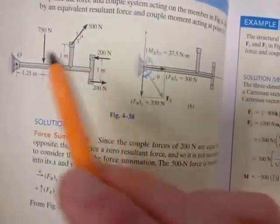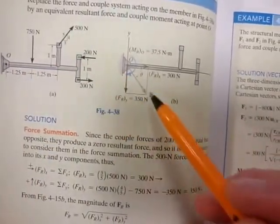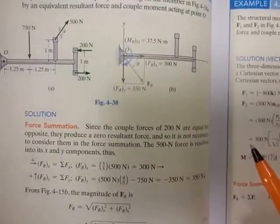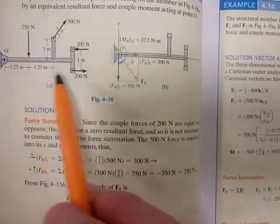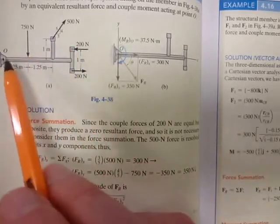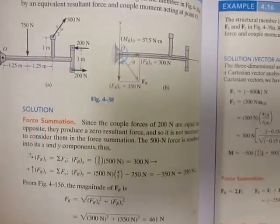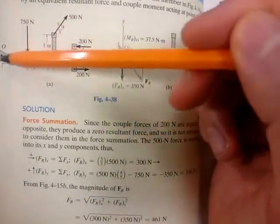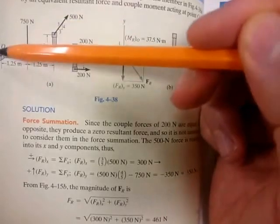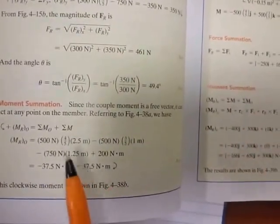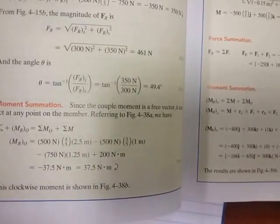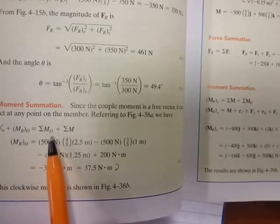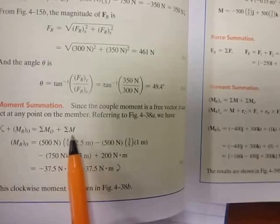Because I've moved the forces to a point not along their lines of action, I need to also include the moments that these forces are causing about that point. So the resultant moments about O equals the sum of the moments due to the forces about O plus the sum of the existing couple moments. The moment of the 750 Newton force about point O is 750 times 1.25, and it's clockwise.